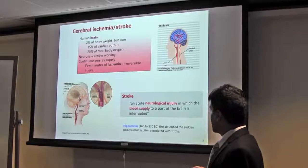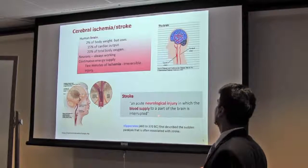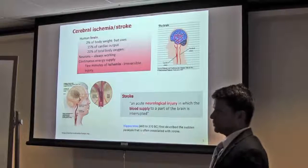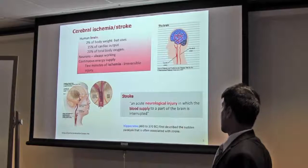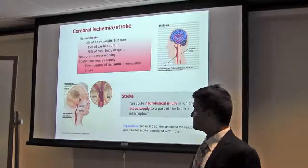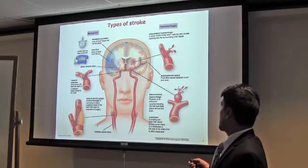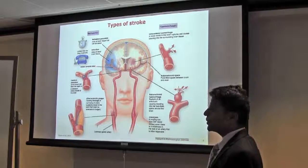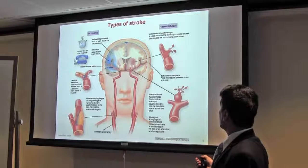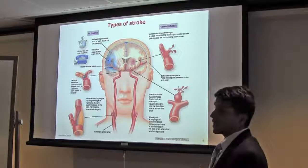Stroke is an acute neurological injury in which the blood supply to a part of the brain, or whole brain, can be interrupted. Hippocrates, around 1,000 years ago, first described this sudden paralysis that is often associated with stroke. There are mainly two kinds of stroke: ischemic stroke when the blood vessel is blocked, and hemorrhagic stroke when any blood vessel in the brain is ruptured causing bleeding into the surrounding brain tissues.